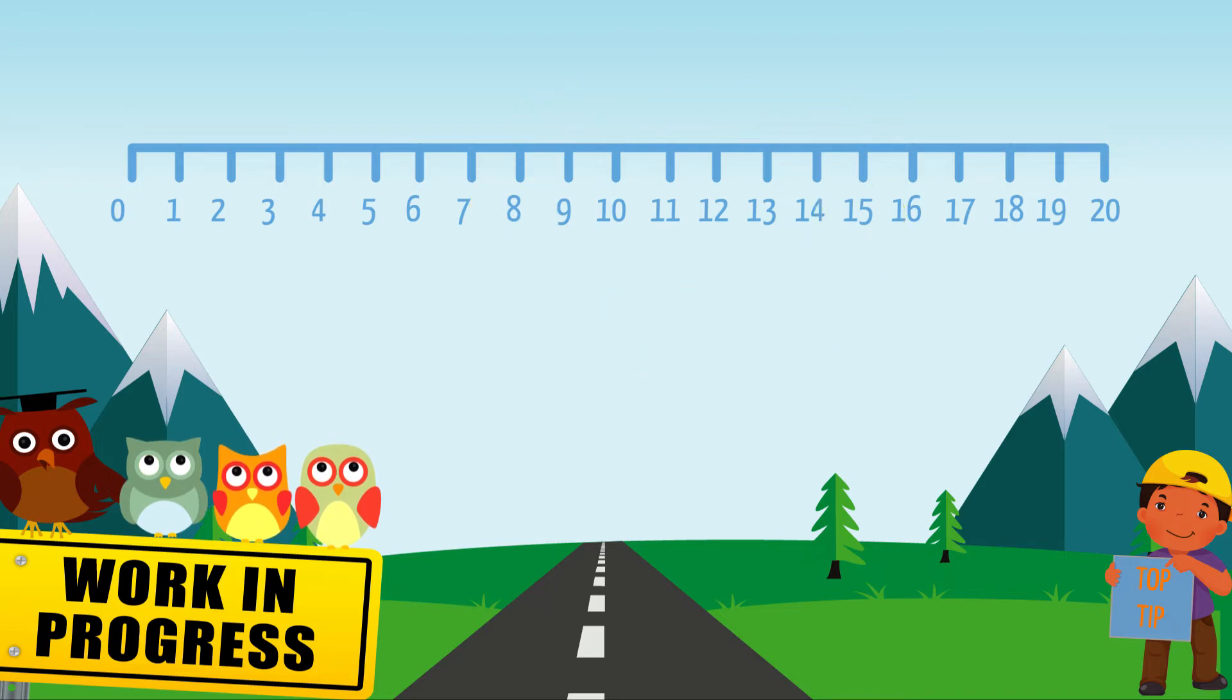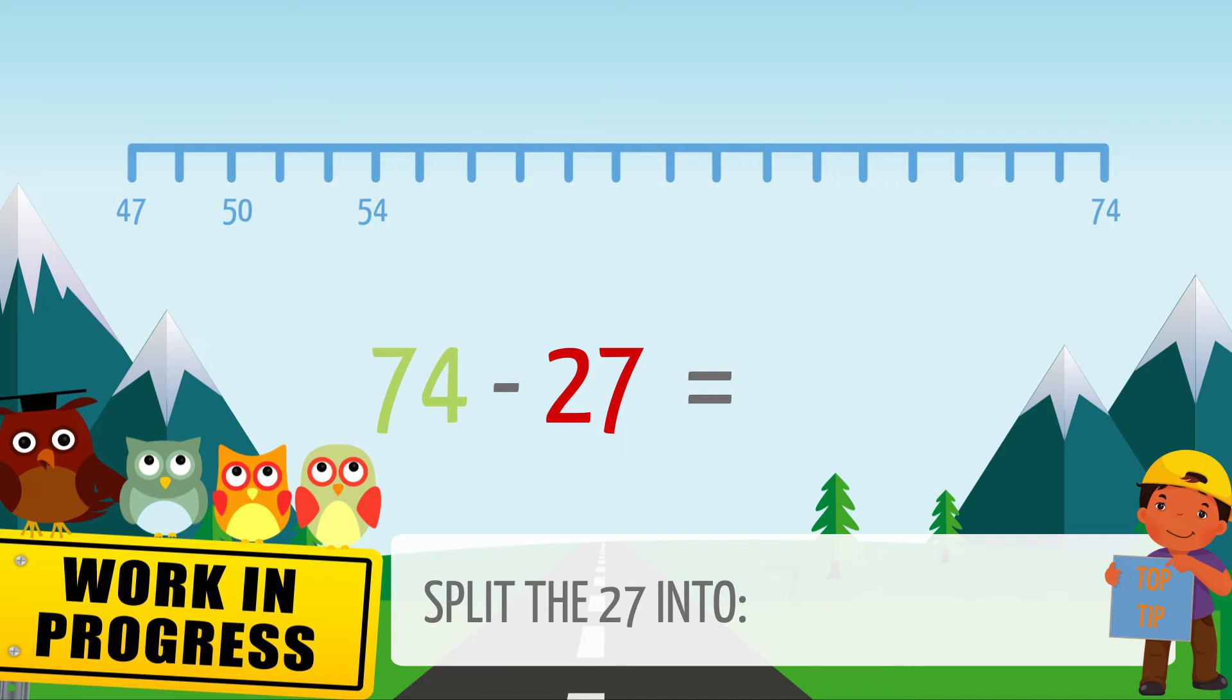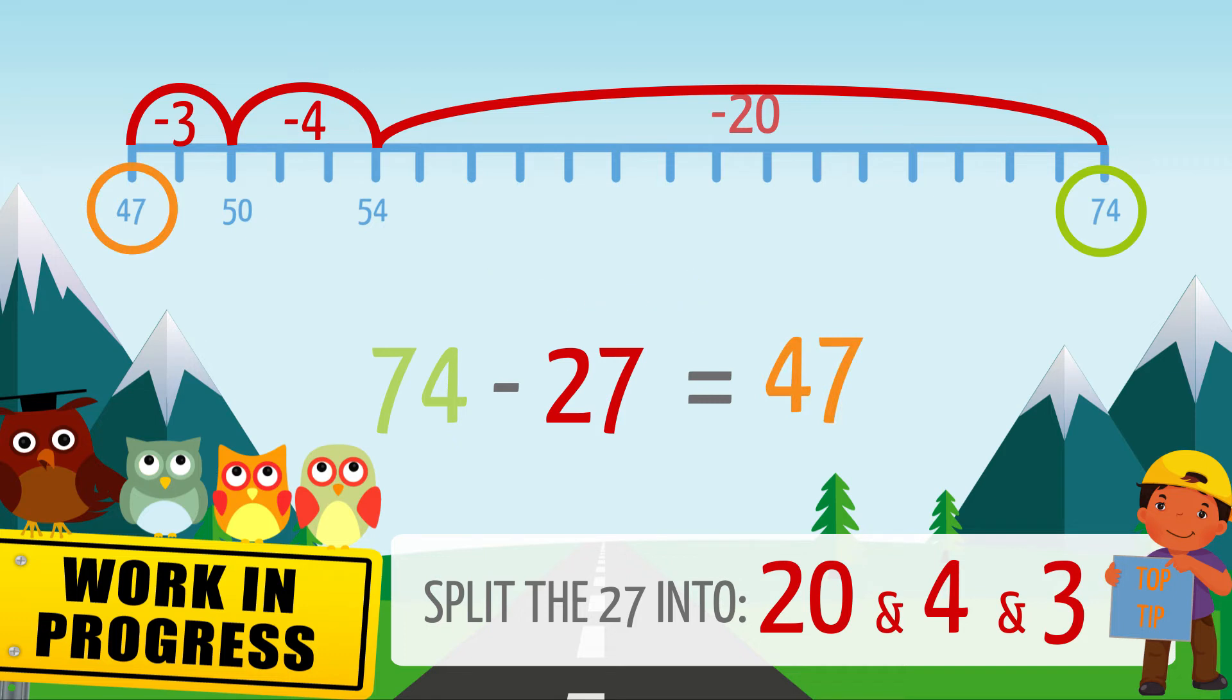Let's try another example. 74 minus 27. We can solve this by splitting 27 into 20, 4 and 3. 74 minus 20 is 54. Now let's subtract 4 from 54. We get 50. Finally, 50 minus 3 equals 47. So 74 minus 27 is 47.